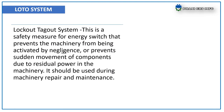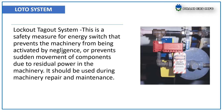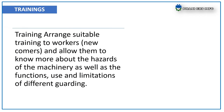Moving on to administrative controls — the lockout/tagout system is a system of measures for energy switching that prevents the machinery from being activated by negligence, or prevents sudden movement of components due to residual power in the machinery. It should be used during machinery repair and maintenance. Trainings — arrange suitable training for workers to know more about the hazards of machinery as well as the functions and limitations of different guards.